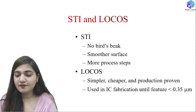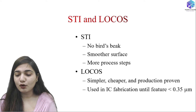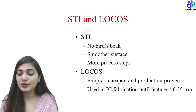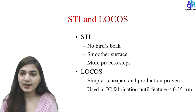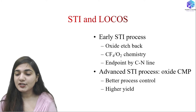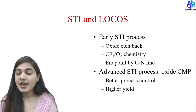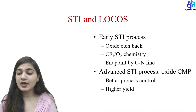The differences between STI and LOCOS: in STI we have no bird's beak problem, a smoother surface, but more process steps — the first two are advantages and the last is a disadvantage. LOCOS is simpler, cheaper, and a production-proven method, but it can only be used where the feature size is greater than 0.35 micrometers and cannot be used with smaller feature sizes. Early STI processes used oxide RBEC processes with CF₄ and O₂ chemistry, finding the endpoint with CN lines.